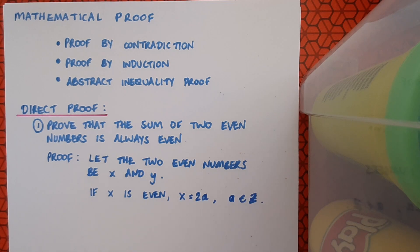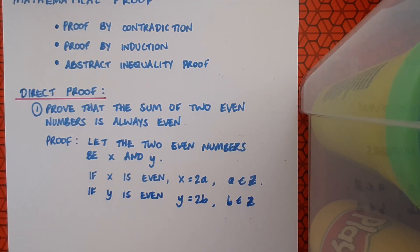If x is even, I can say that x is two times a, so a is just some number, some integer. So if x is even, two goes into it, so it's two times something. And a is an integer because x can be a positive even number but it can also be a negative even number. And if y is even, y equals two times b and b is an element of Z, b is an integer as well.